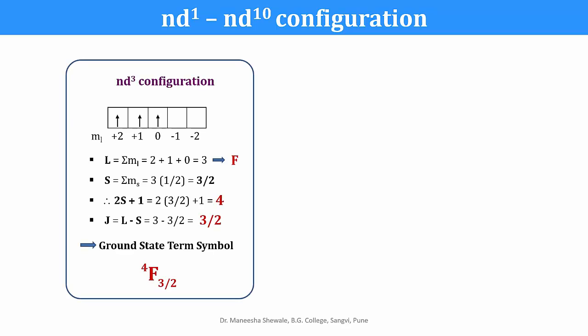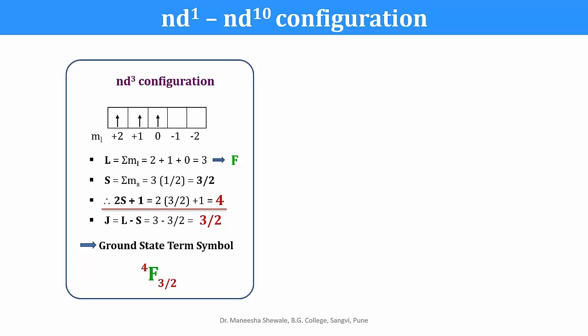Moving to the D block: for the D subshell, ML values run from +2 to −2. For the D3 configuration, the 3 electrons fill orbitals with the largest ML values: +2, +1, 0, so summation of ML = 3, represented by F. All 3 electrons have spin +½, so summation of MS = 3/2 and spin multiplicity = 2×(3/2)+1 = 4. The subshell is less than half filled, so J = L−S = 3−3/2 = 3/2. The ground state term symbol is 4F3/2.